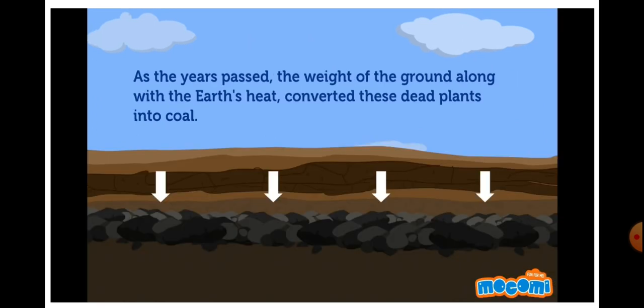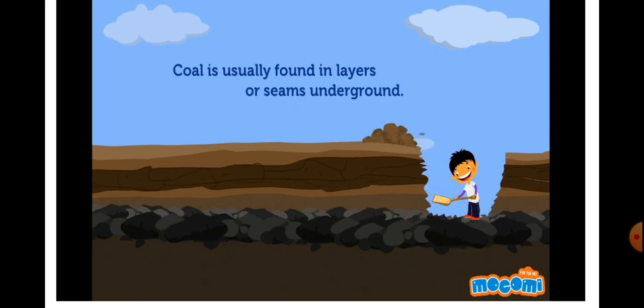There are different varieties of coal depending upon the amount of carbon content in them. Coal is extracted from the earth by mining. It is used as a fuel for cooking, heating, and generating electricity. It is also used to run steam engines and factories.